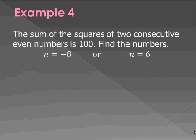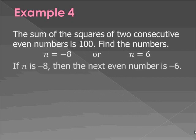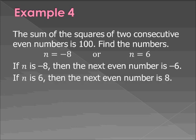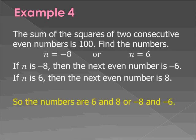All right. Now we've got to figure out the next number. If n is negative 8, then the next even number is negative 6. If n is 6, then the next even number is 8. So we have two pairs of solutions. The numbers are either 6 and 8 or negative 8 and negative 6.